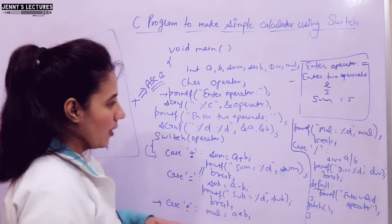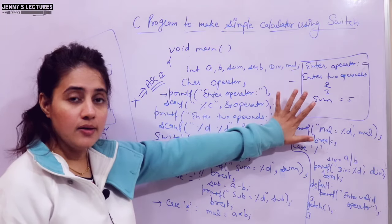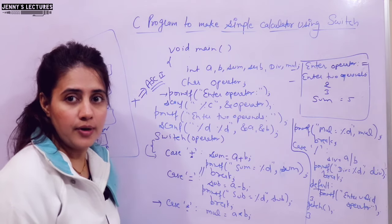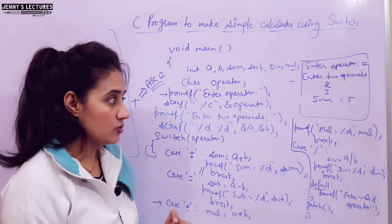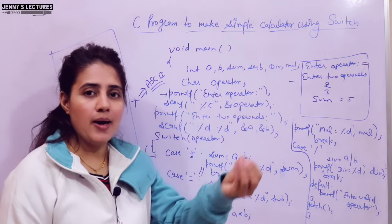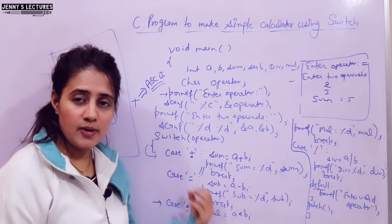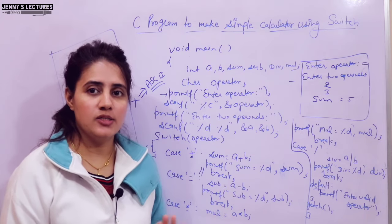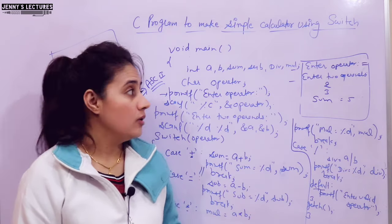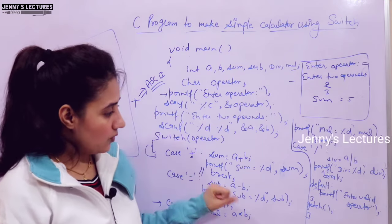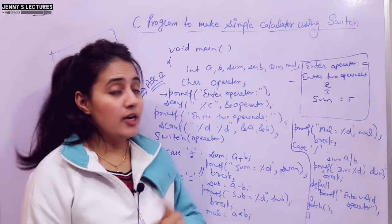I hope you now understand how to think logically when writing a program using switch statement — first think what output you want, then write your program accordingly. You can run this program and if you get any error or have any doubt, ask me in the comment box. We will be discussing many more programs in C like patterns, Fibonacci series, factorial, and more. Please tell me in the comments whether I should use the whiteboard or switch to an IDE like Visual Studio or Turbo C. See you in the next video, bye-bye, take care.